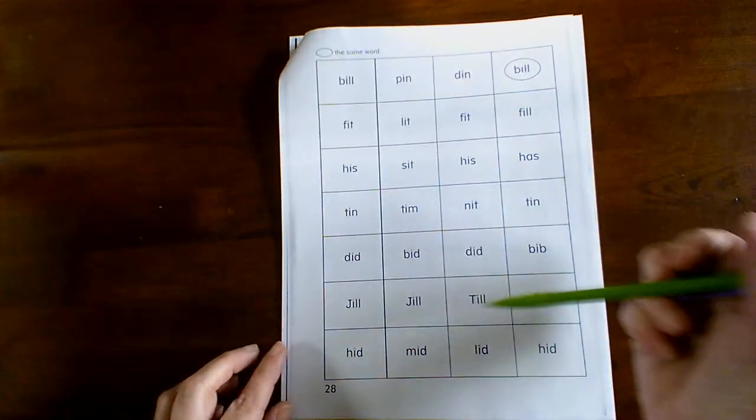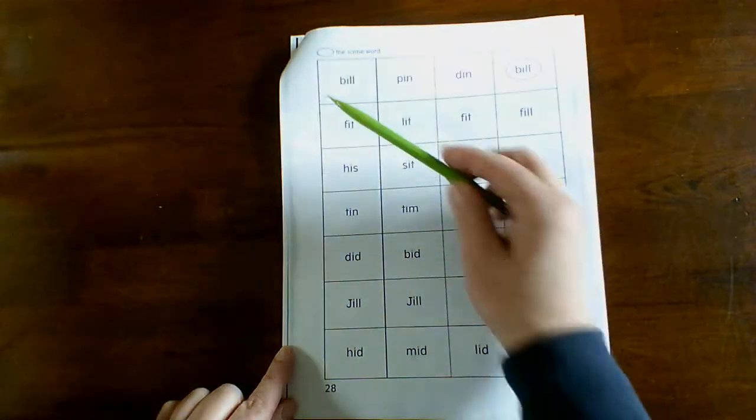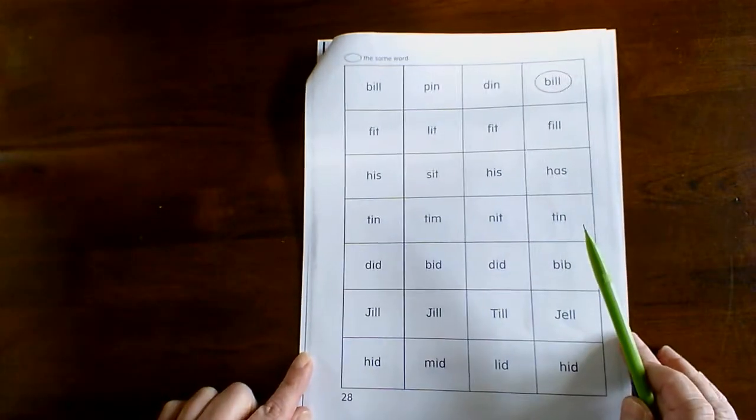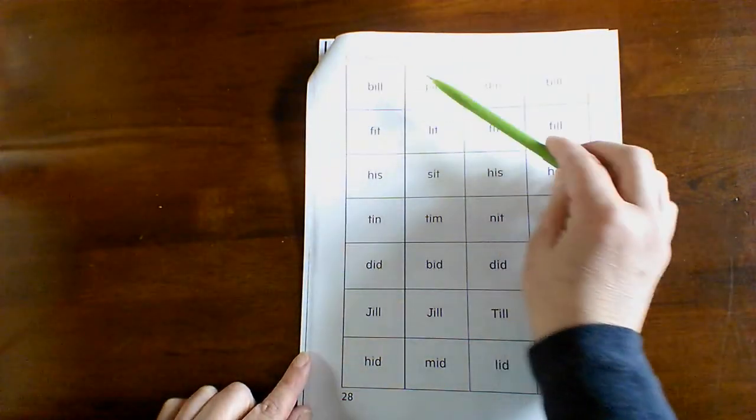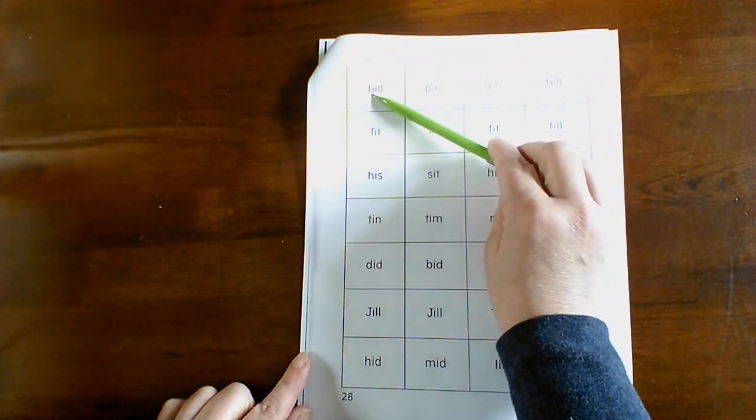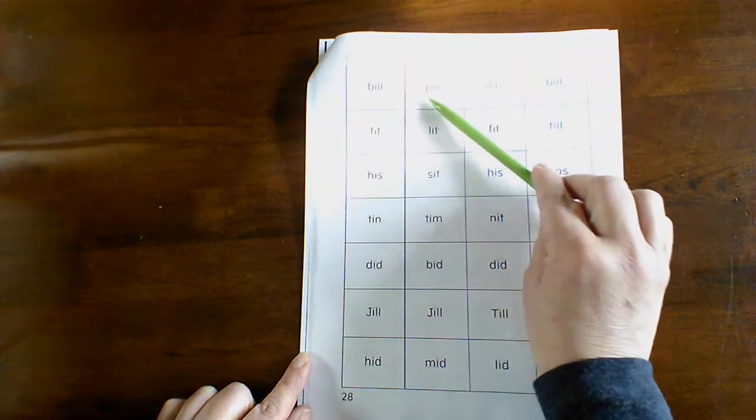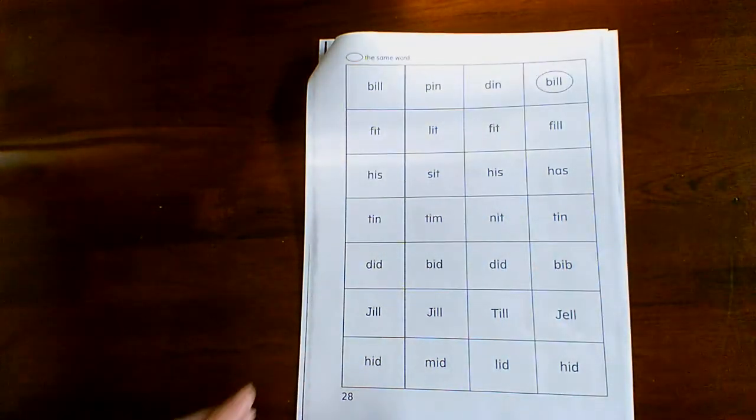And then on this page, it says circle the same word. So I want you to read this word like we were practicing before. Say it slow and then say it fast. So say all the sounds. B-I-L. Bill. And then look over here and find the word that says Bill and circle it.